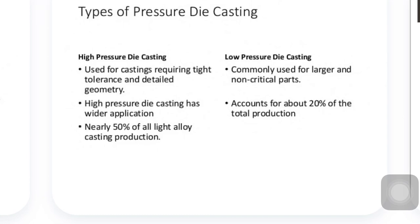There are two types of pressure die casting: high pressure die casting and low pressure die casting. High pressure die casting is used for castings requiring tight tolerances and detailed geometry. Low pressure die casting is commonly used for larger and non-critical parts. High pressure die casting has wider applications, while low pressure die casting accounts for about 20% of total production. Nearly 50% of all light alloy casting production is done by high pressure die casting.